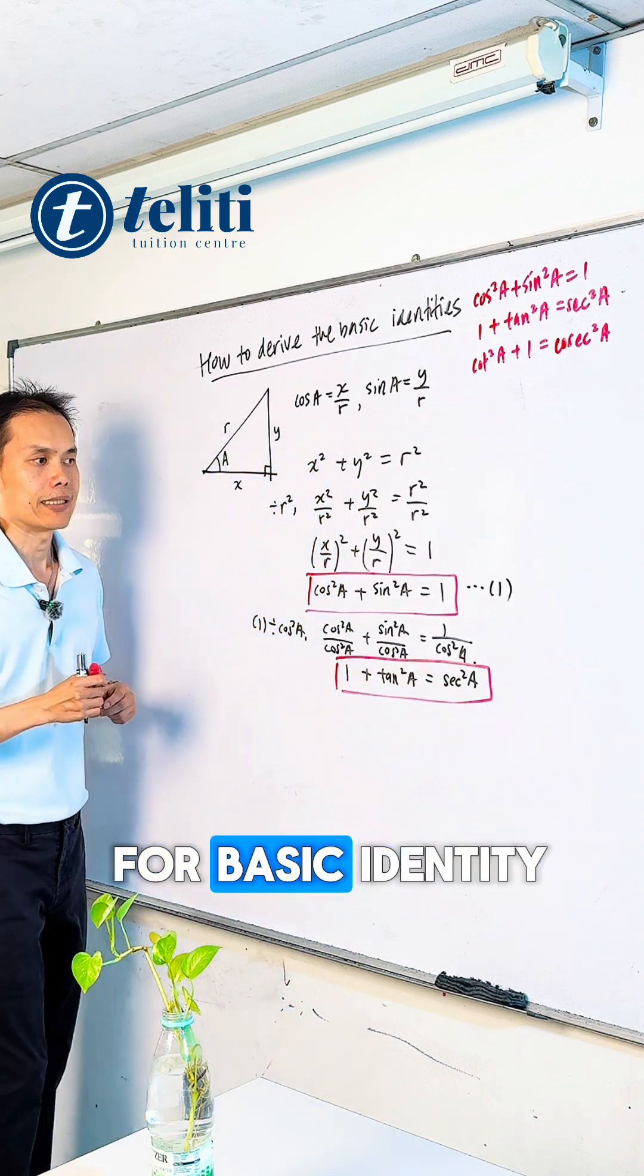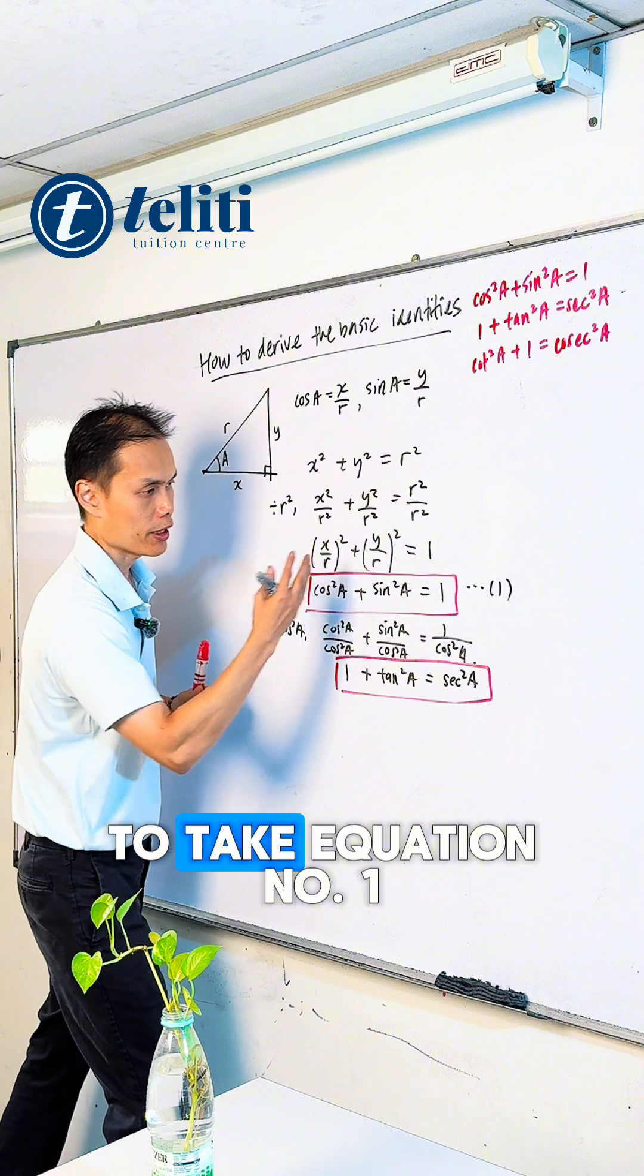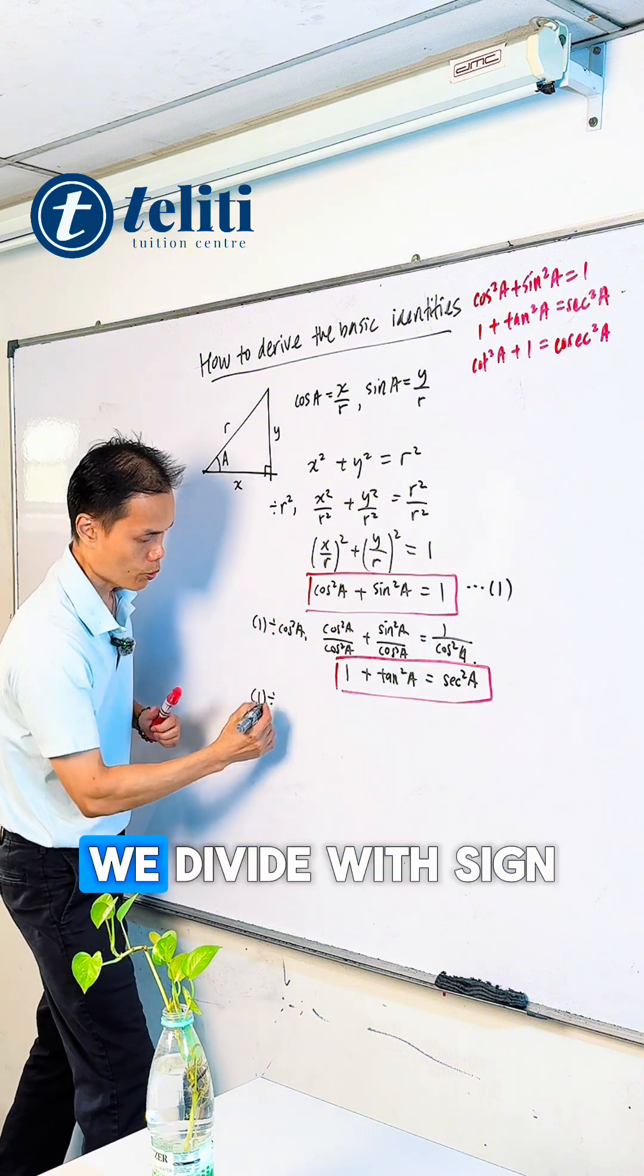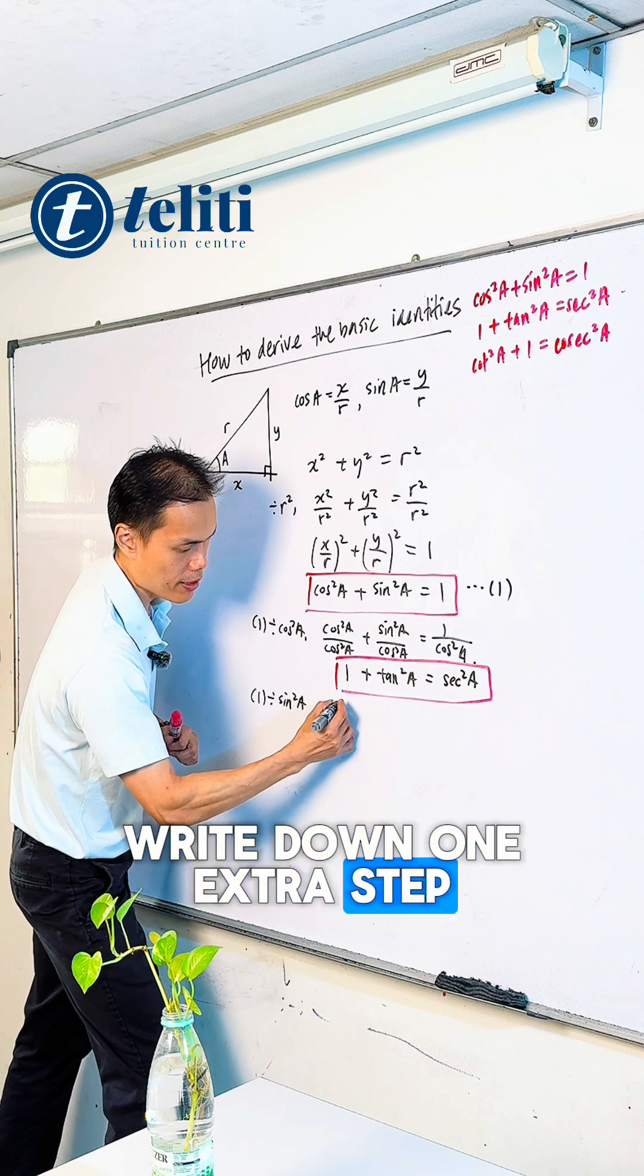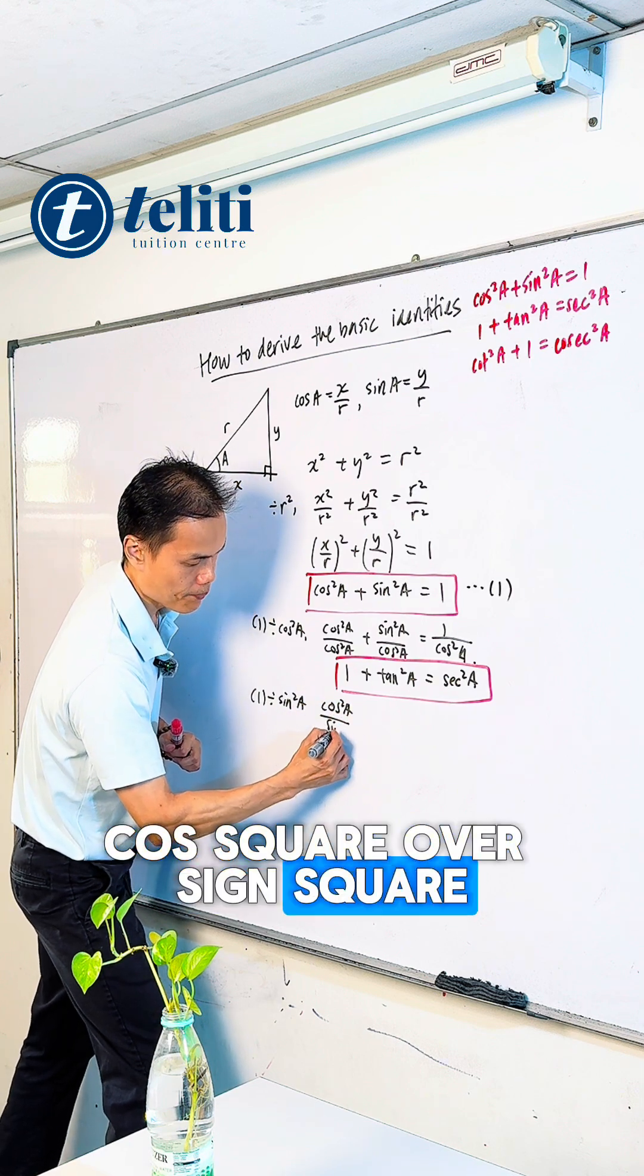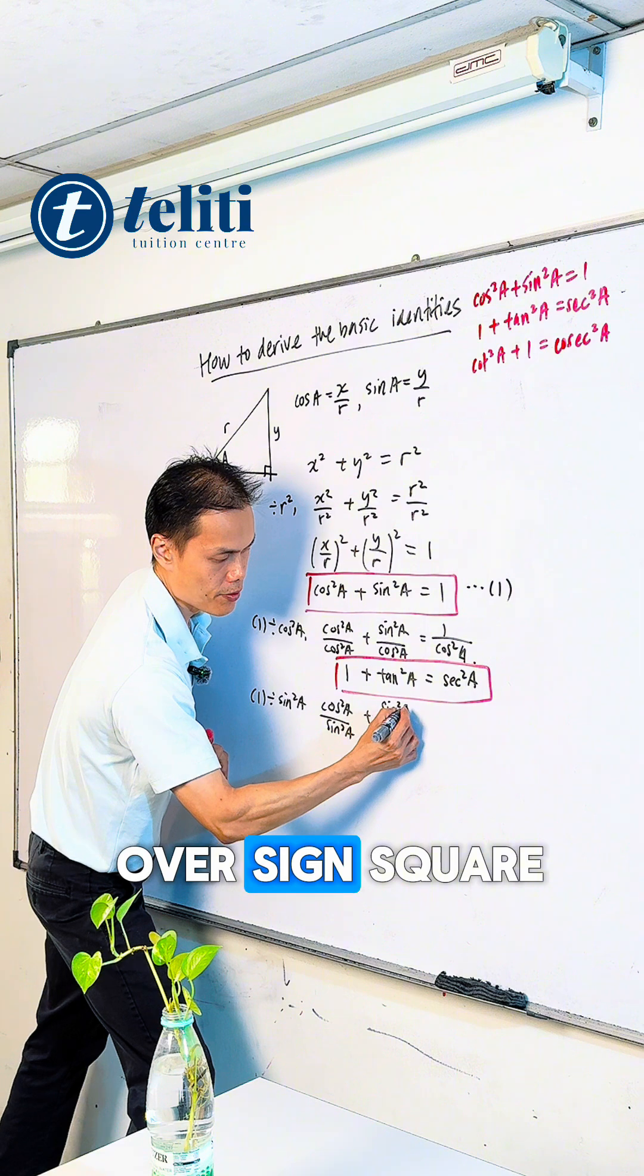Now if you take equation 1, instead of dividing by cos², we divide by sin²A. Let me write one extra step: cos²A/sin²A + sin²A/sin²A = 1/sin²A.